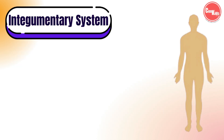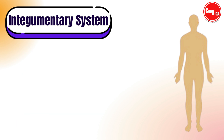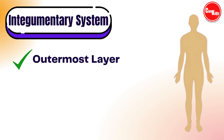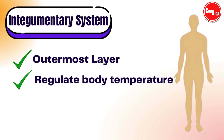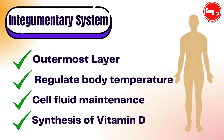First, let us talk about the integumentary system. It consists of hair, nail, skin, and glands. It forms the outermost layer of our body. It helps to regulate our body temperature, as well as maintain fluid in the cells and synthesis of vitamin D.